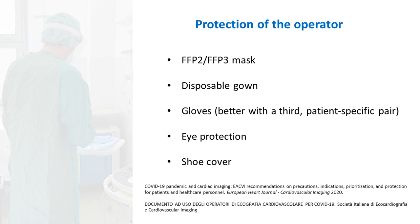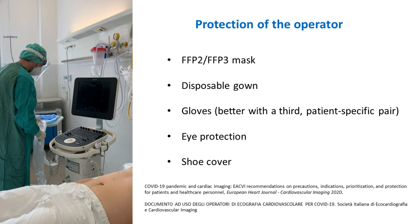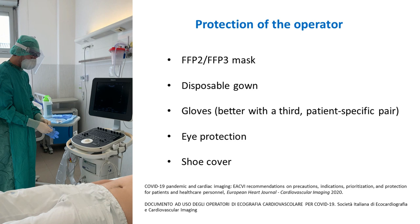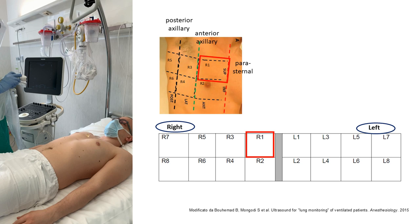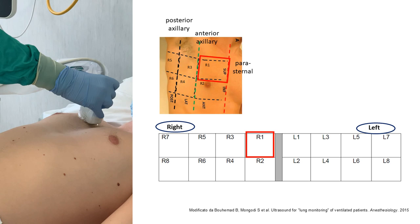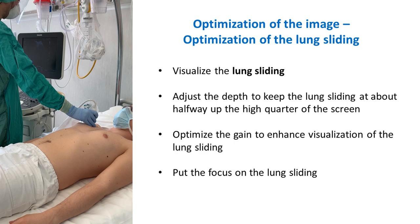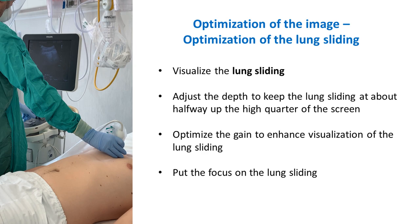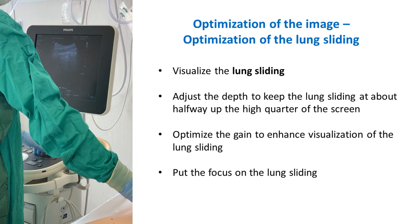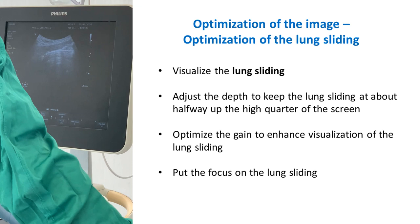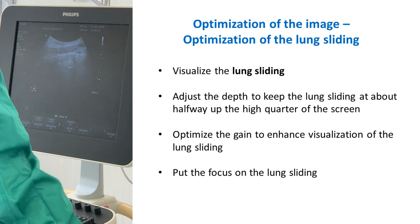The operator should be properly protected as indicated by recommendations and specific documents. To protect the operator, it is advisable to use a third pair of gloves, which will be discarded at the end of the exam. Let's start with the right anterior thorax upper part. We place the probe on the skin and then optimize our image. The pleural line is our reference — we should be able to visualize it with its lung sliding. We should optimize the gain to better visualize the pleural line and lung sliding. The depth should be adjusted so the pleural line is at about halfway up the highest quarter of the screen. If possible, the focus should be positioned at the level of the pleural line.